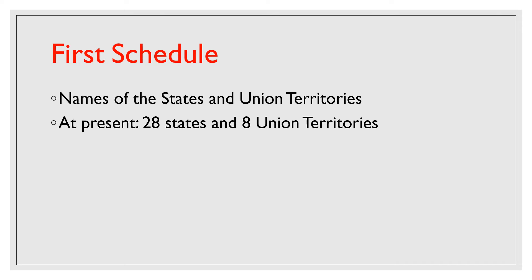Schedule 1 is related to the names of the states and their territorial jurisdiction, and names of the union territories and their extent. At present we have 28 states and 8 union territories. We have to keep in mind that if there is any change in the number of states, or if any new state is added, this change will happen in the first schedule because it clearly deals with the names of the states and union territories.